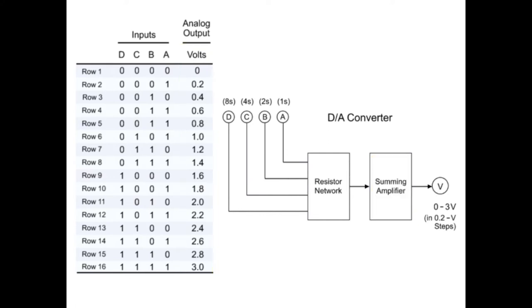With an input of 0, 0, 0, 0, according to the truth table, the voltage output would be 0. Inputting 0, 0, 0, 1 will result in an output of 0.2 volts.